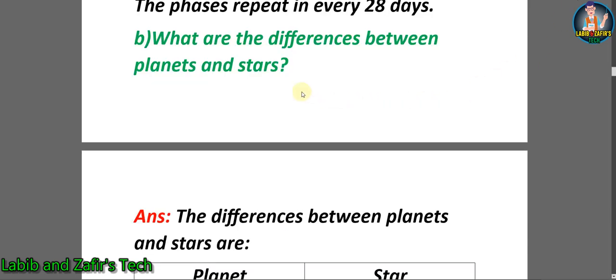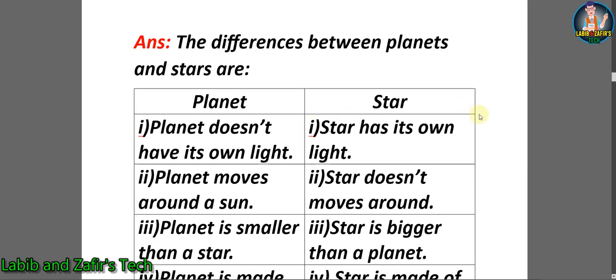So students, B question is: What are the differences between planets and stars? Let's see the answer. Here is the answer and we can see there is a chart. The differences between planets and stars are - in the left column is planet and right column is star.